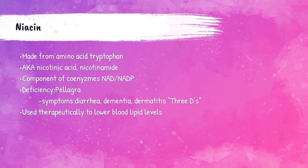Vitamin B-3, or niacin, or nicotinic acid, is a component of coenzymes NAD and NADP, which are utilized in several reactions in the human body. A deficiency of niacin can cause a disorder called pellagra. Pellagra is characterized by three main symptoms — called the three Ds — because the symptoms are diarrhea, dementia, and dermatitis. As of now, there are no ways of assessing niacin values in the clinical laboratory.